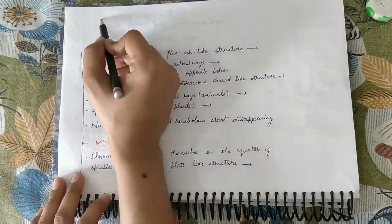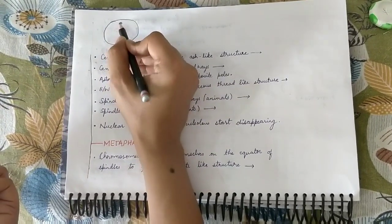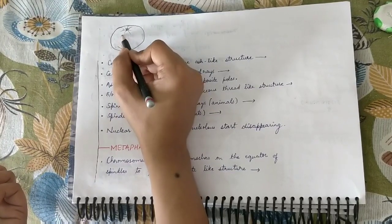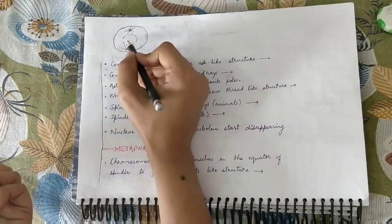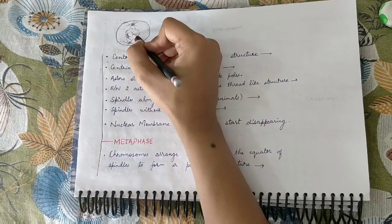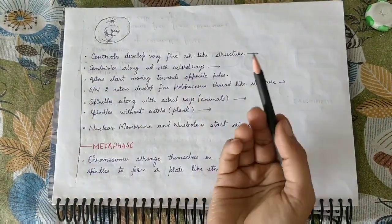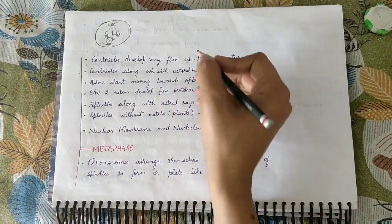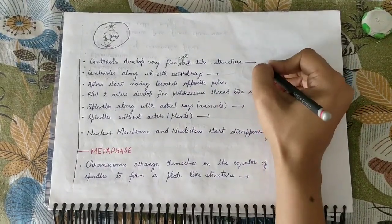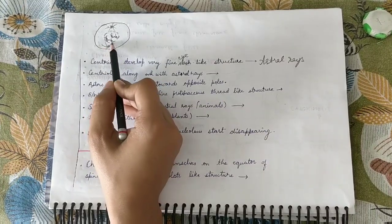So in prophase: centrioles split and move towards opposite poles, astral rays develop, nuclear membrane disappears, nucleolus disappears, and chromatin fibers convert into chromosomes. The centrioles along with astral rays form structures called asters.